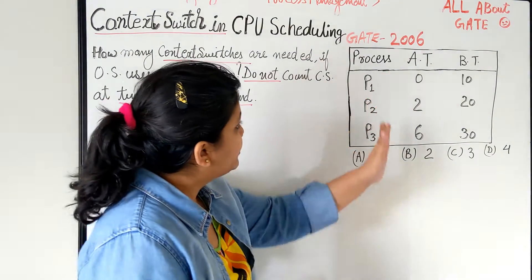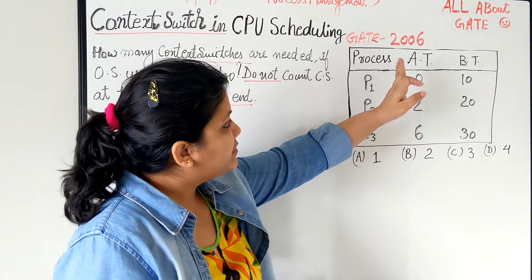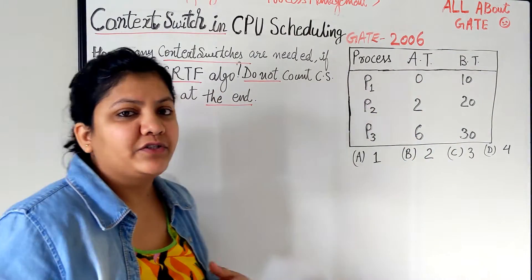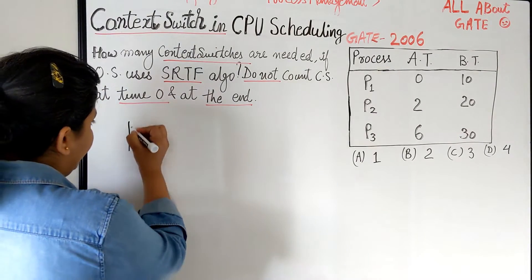Here are the data for the question: three processes P1, P2, P3 are there, whose respective arrival and burst time is given. So here we just have to perform CPU scheduling. So let's begin.